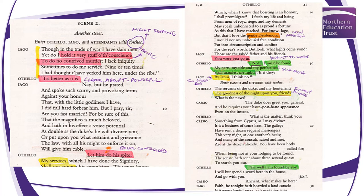Othello says, ''Tis well I am found by you. I will but spend a word here in the house and go with you.' This characterisation of Othello as calm and controlled is very important — it sets him up for the ultimate downfall. When he becomes a horrific character later, it's even more tragic because of how he was initially characterized.